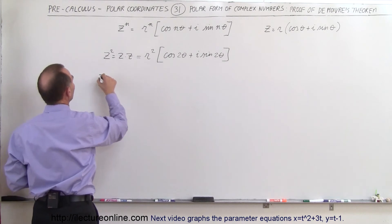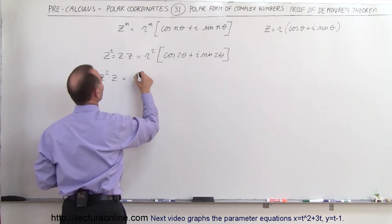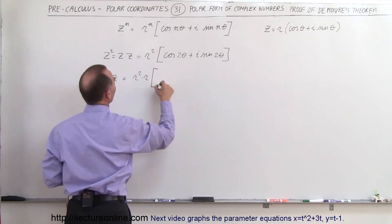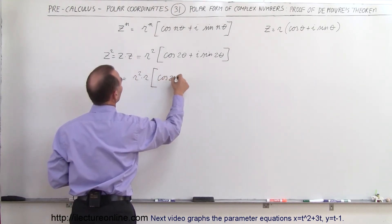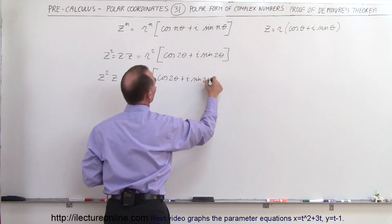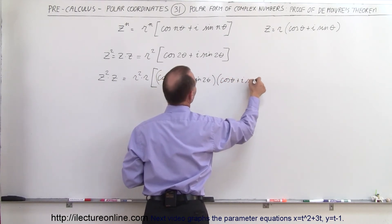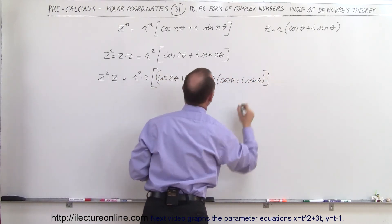Well, that would be equal to r squared times r, times the cosine of 2 theta plus i times sine of 2 theta, multiplied times cosine of theta plus i times sine of theta.